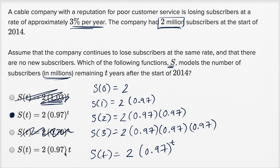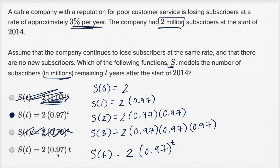And then this one — they're saying you're multiplying by T. One way to realize that this is going to break down very fast is at T equals zero, this is going to give us zero. But at T equals zero, you don't have zero subscribers — you have two million subscribers. The other way to think about it is this one's going to increase as T increases, while we need to have a decreasing number of subscribers. So you could rule that one out as well.